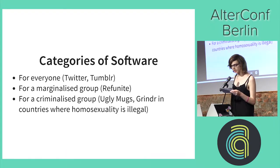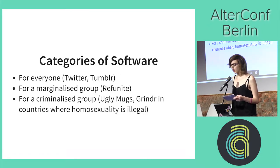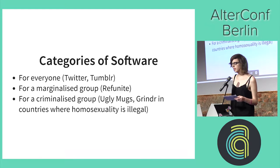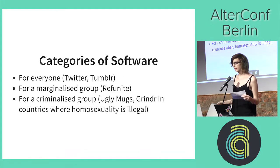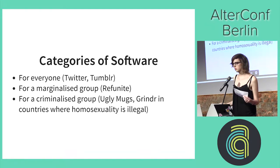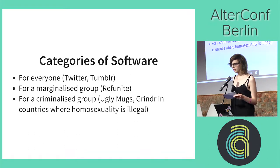The example I have for this is Refunite, which is a tool to help displaced refugees reconnect with their family. They have a challenge that they need to help people find their friends and family, but their users might still be trying to escape from groups who might be targeting them, so they have to be quite careful with the way they use their data.